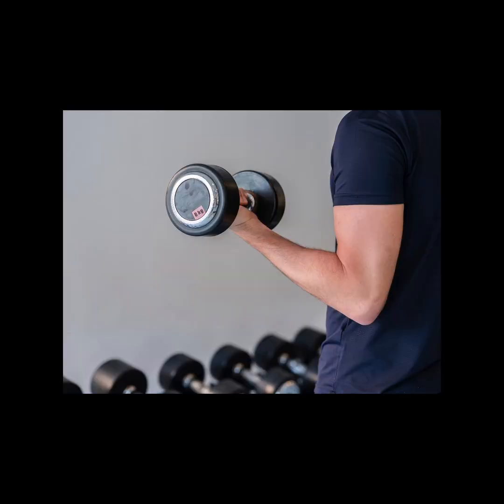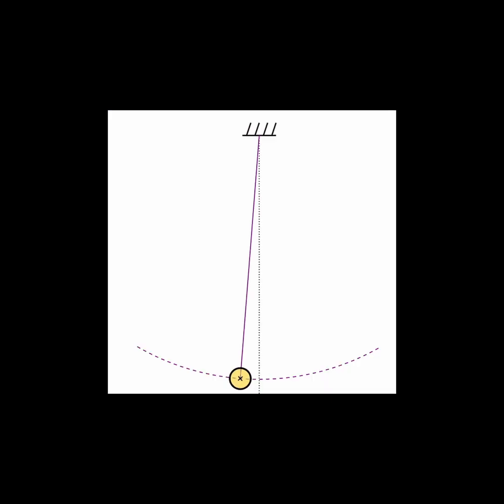Where did that energy come from? Our body did work on the mass. Our muscles contracted to produce a force in opposition to gravity that was applied over a distance up to the new height of the mass.